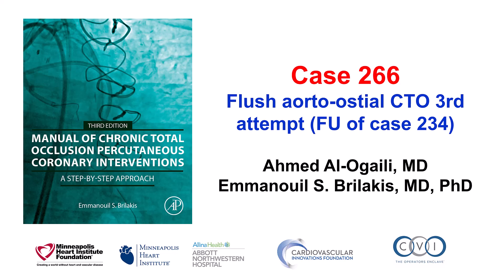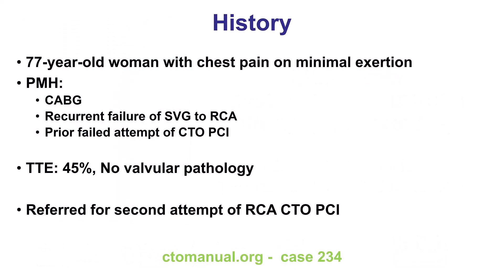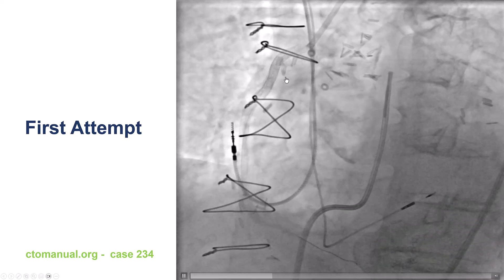This is Ahmed Alokaili and Manos Brilakis presenting Case 266 for the Manual of CTO Interventions. This is follow-up from Case 234, which was a flush aortic ostial CTO that had two unsuccessful attempts for re-canalization. The patient was an older woman with previous CABG and recurrent failure of a saphenous vein graft to the right coronary artery that had a failed attempt and then was sent to our institution, where a second attempt was performed.